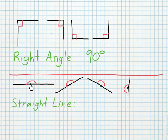A straight line is just that — a straight line. You can see it has two arms, a vertex, and the interior angle marked in red, but really a straight line is just a line, and it is always exactly 180 degrees.